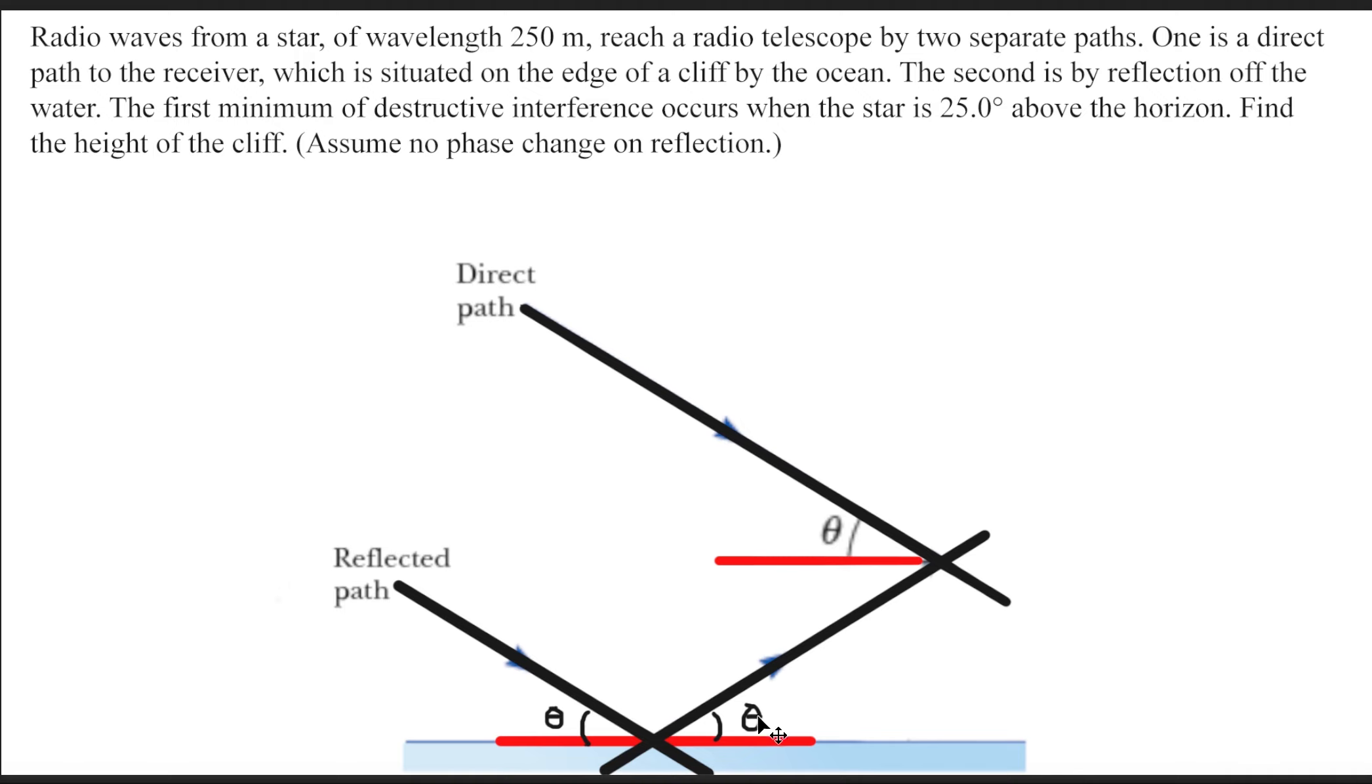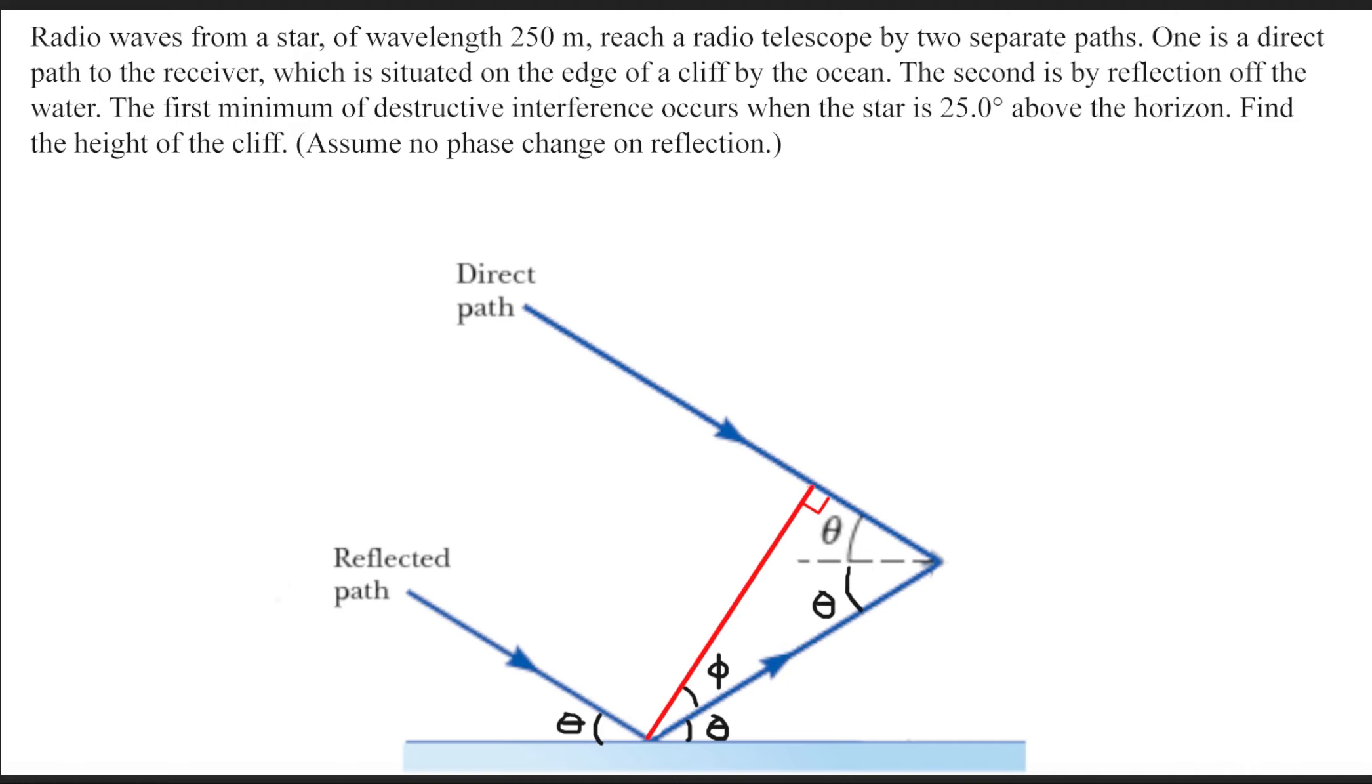And lastly, this angle right here and this angle are alternating interior angles, so therefore they are also congruent. This will later come in handy when we start using some trigonometry to solve this question. So what I've gone ahead and done here is created this triangle, this right triangle. You'll also notice this symbol right here. I've denoted this angle using the symbol phi, spelled P-H-I.